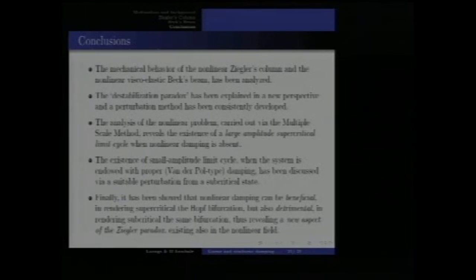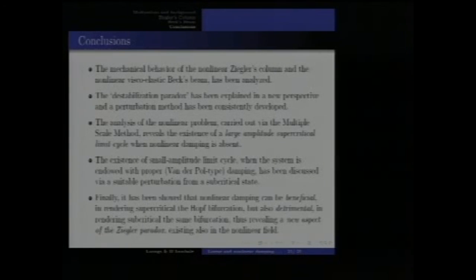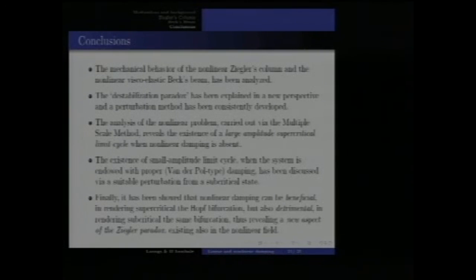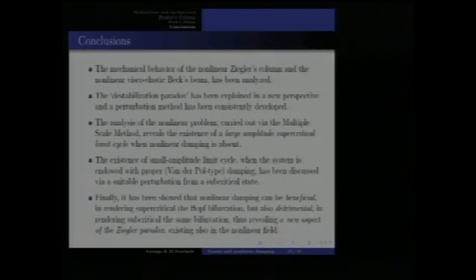In conclusion, the mechanical behavior of the nonlinear Ziegler column and the nonlinear viscoelastic back beam has been analyzed. The destabilization paradox has been explained from a new perspective, and a perturbation method has been consistently developed. The multiple scale analysis of the nonlinear problem reveals large-amplitude supercritical limit cycles when nonlinear damping is absent, and small-amplitude limit cycles when the system is endowed with Van der Pol-type damping, discussed via a perturbation from a subcritical state. Finally, nonlinear damping can be beneficial by rendering the Hopf bifurcation supercritical, but it can also be detrimental by rendering it subcritical — revealing a new aspect of the Ziegler paradox existing also in the nonlinear field.